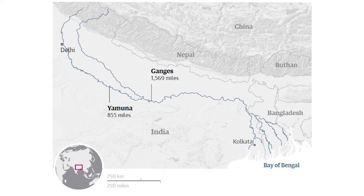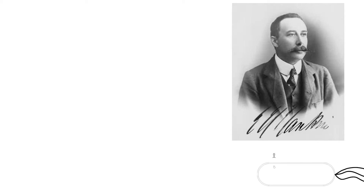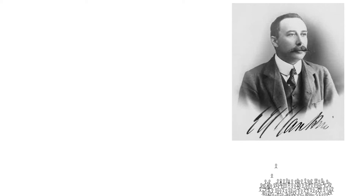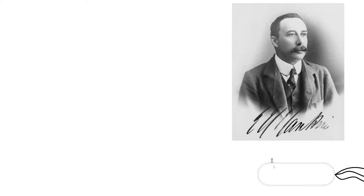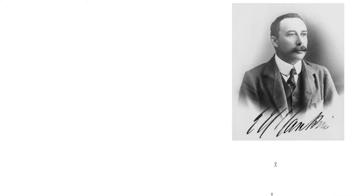The year is 1896. A well respected English researcher is studying the properties of river water from the Yamuna and Ganges rivers, and he goes by the name of Ernest Hanbury Hankin - and let me tell you there are few men with a more English sounding name. He happens to notice that fewer people are getting sick when they drink the water from these rivers.